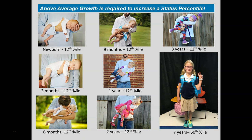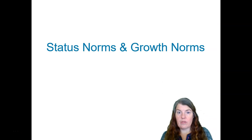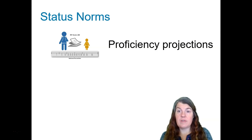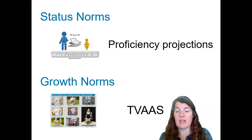The same is true of the MAP assessment. If a child needs to increase his or her status percentile, then above average growth would be required. If a child experiences below average growth, they're going to lose ground in their status percentile. So with these status norms and growth norms that MAP has, we can see what the proficiency projection will be. The status norms — the percentile — are what will become the proficiency projection. So if a student is not projected to be on track or mastered when he or she takes TNReady, you know that above average growth is going to have to happen. And the growth norms are what give us a window into TVAAS.